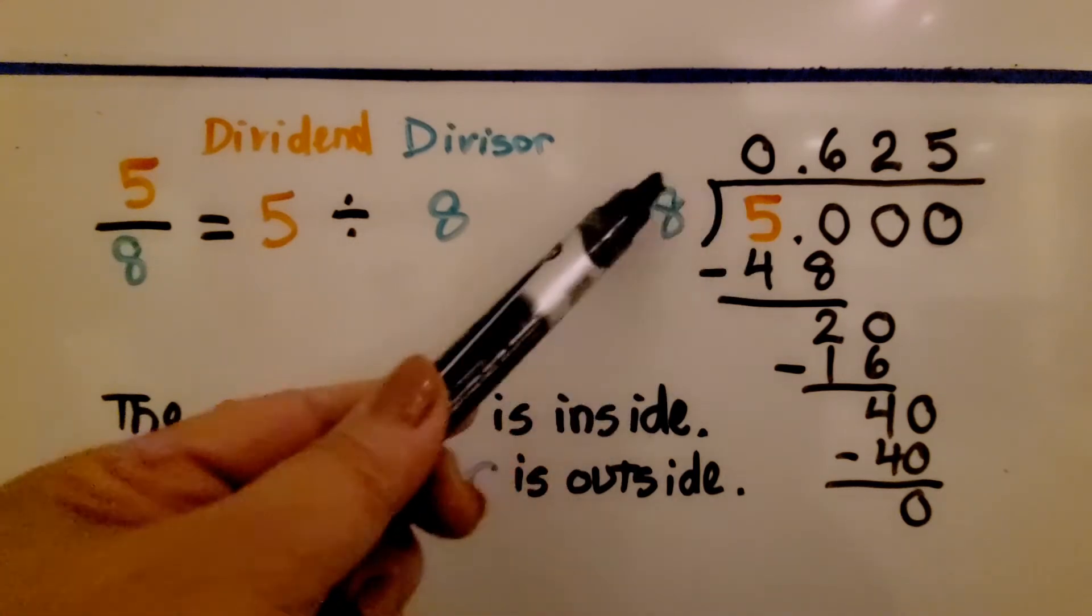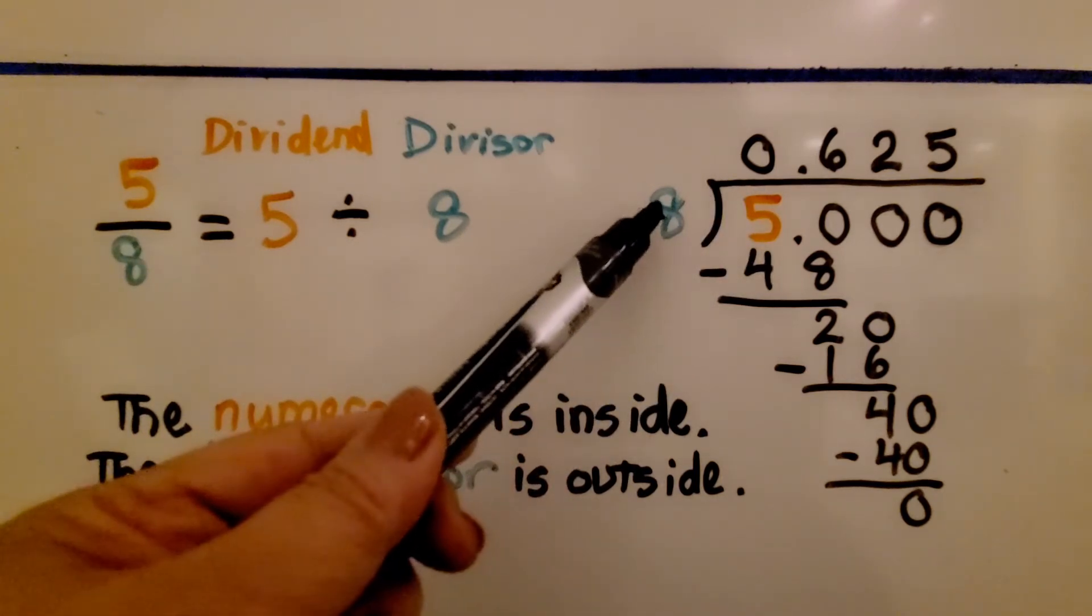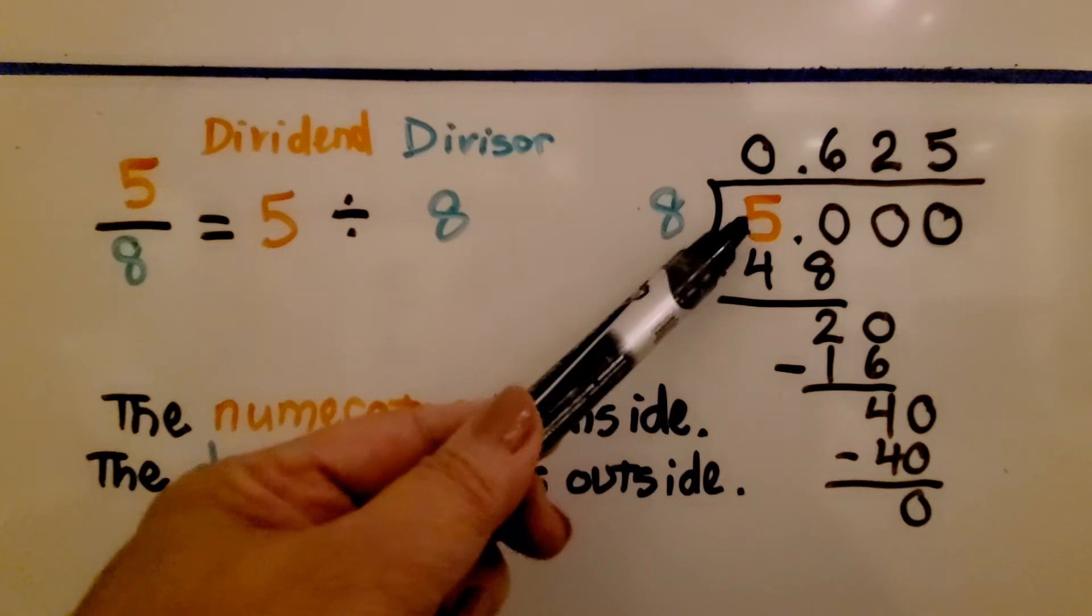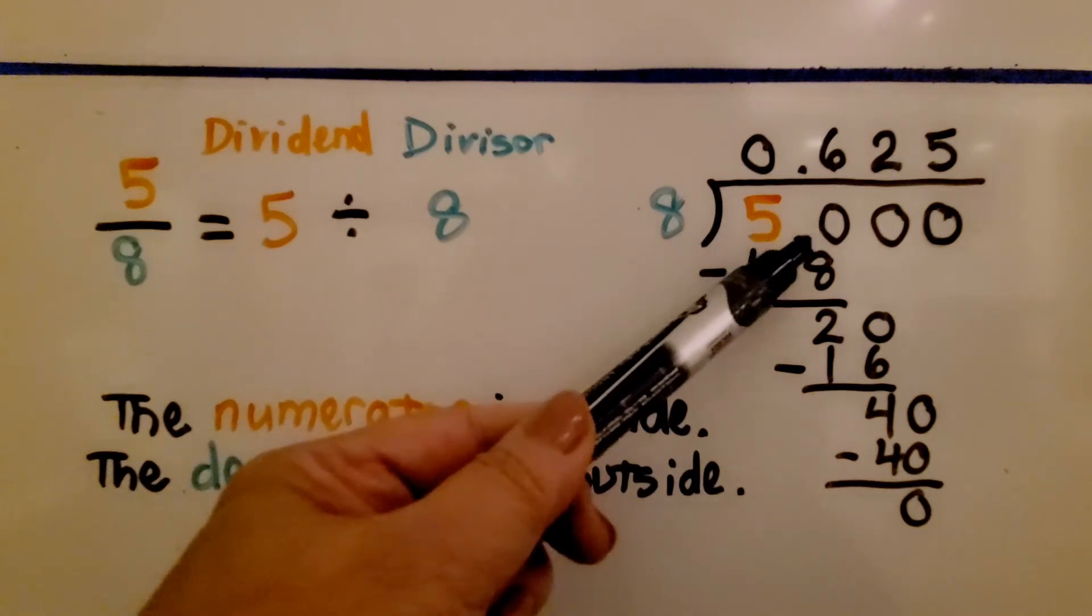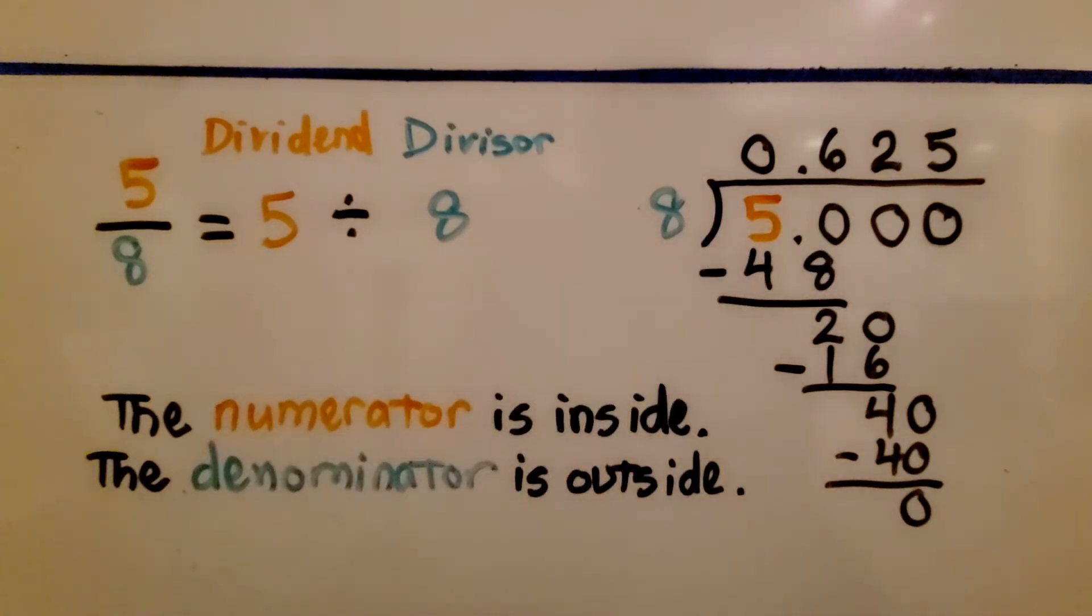We have 5 divided by 8. We're seeing how many times 8 can fit into 5. We may have to add a decimal point and some zeros to keep dividing. The numerator is on the inside, the denominator is outside.